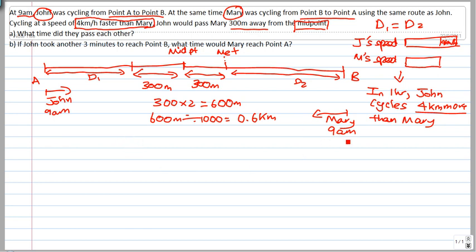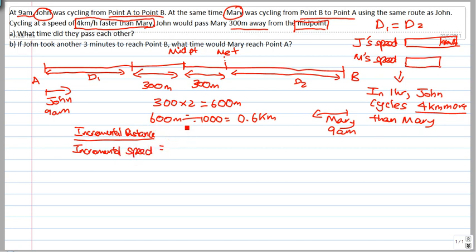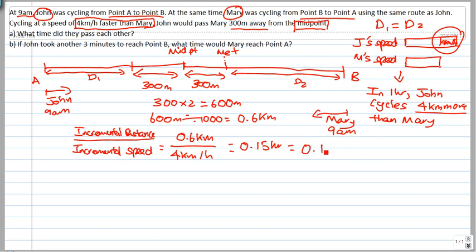The key formula here is incremental distance over incremental speed. The incremental distance traveled is 0.6 kilometers — that's 600 meters divided by 1000 — and the incremental speed is 4 kilometers per hour. So 0.6 divided by 4 gives you 0.15 hours.